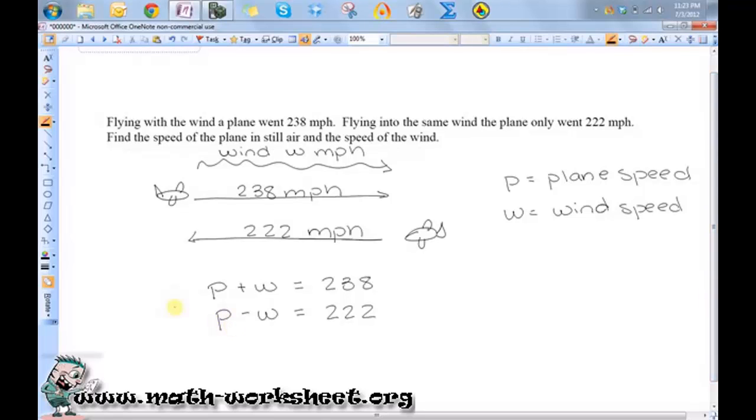So I'm going to solve this one by using the addition method. The reason I'm doing that is these two would already cancel each other out. So if I add these two equations together, column by column, I would have 2P plus 0W equals 460.